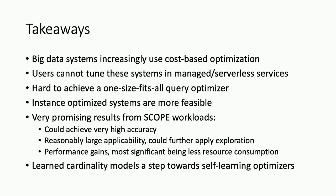In summary, big data systems are increasingly cost-based optimized with no manual user tuning — they must be self-tuned, and users can't tune systems in managed and serverless environments. A one-size-fits-all optimizer is very hard because clouds and workloads are so diverse. But there is hope if you look at specific instances like a given shared infrastructure. We saw very promising results on Scope workloads — high accuracy, large applicability, and significant reduction of resource requirements. We believe learning cardinality models are a step towards self-learning optimizers.